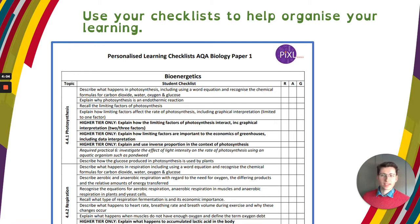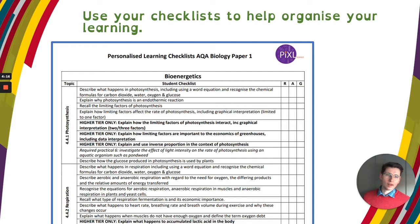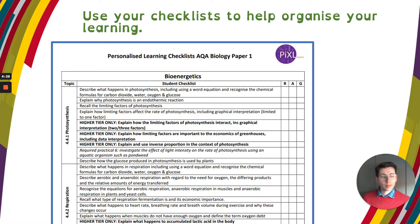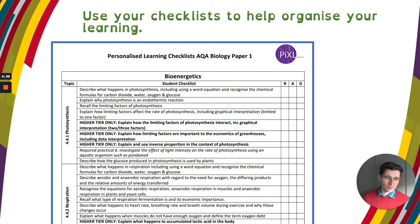You either red it, amber it, or green it. Red means I really don't know what this is — I need to go over it maybe three or four times before the test. Amber means I sort of know it — I might go through it twice before the test. Green means I do know that — it's going to go to the bottom of my revision pile. If you're foundation, ignore anything that says higher tier only, and if you're combined, ignore anything that says triple biology only.